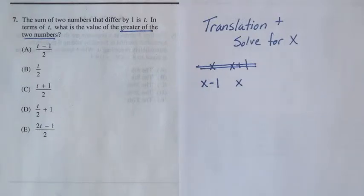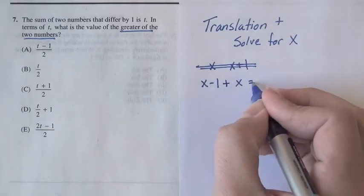Okay, so we have our two numbers x and x minus one. Now the sum of these two numbers is equal to t.